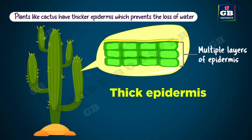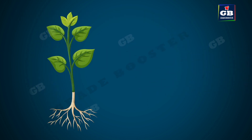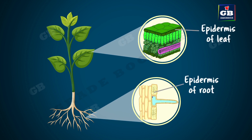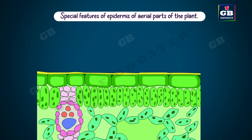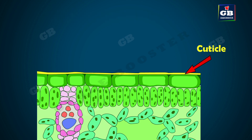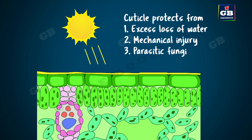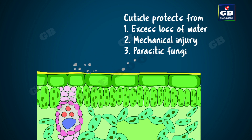The thicker epidermis prevents the loss of water. All parts of the plant are covered by epidermis, but there is a difference between the epidermis of the shoot system and that of the root system. The epidermis cells of the aerial parts of the plant secrete a waxy water-resistant layer on their outer surface called the cuticle, which protects the plant from excess loss of water, mechanical injury, and parasitic fungi.